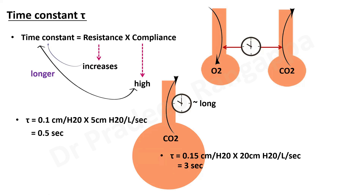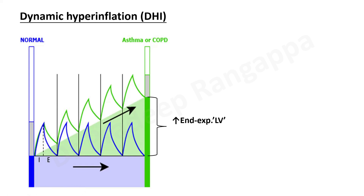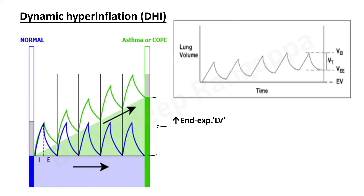Standard ICU ventilators display the time constant, auto-populated based on resistance and compliance values shown on the monitor. Regarding dynamic hyperinflation, which was covered in the previous video: on a volume-time waveform, you can see there is inadequate emptying of volume from the lungs. The blue line represents the normal lung, where there is complete emptying of lung volume, so end-expiratory lung volume does not increase. In COPD, there is inadequate emptying and a cumulative increase in end-expiratory lung volume.